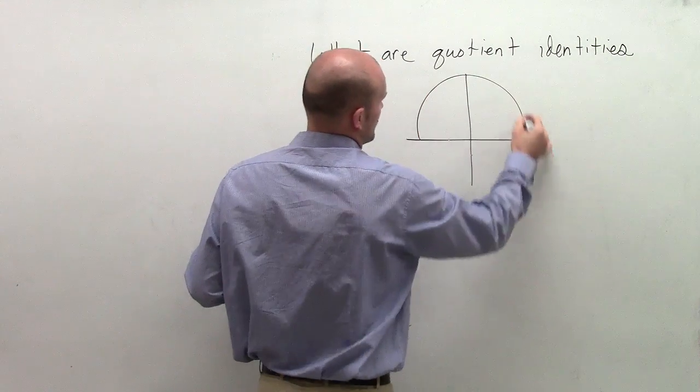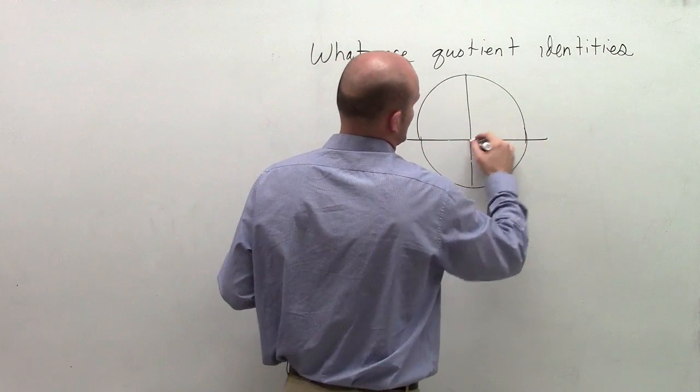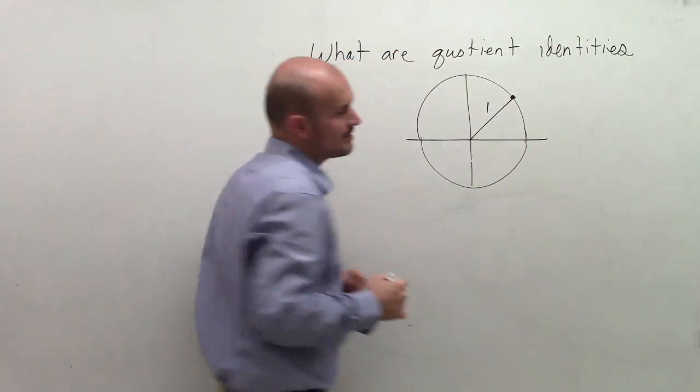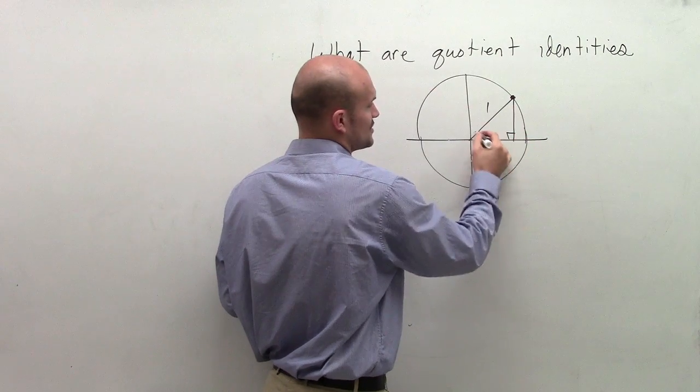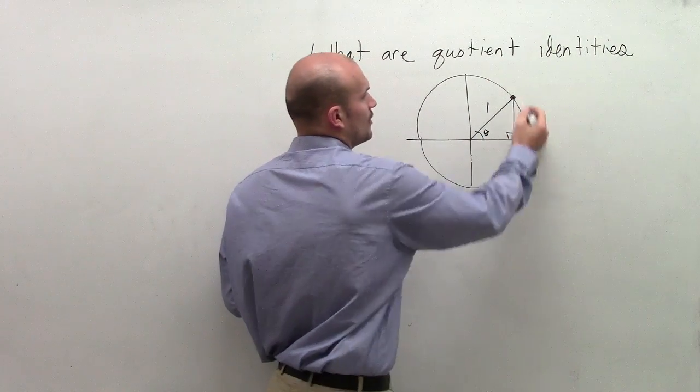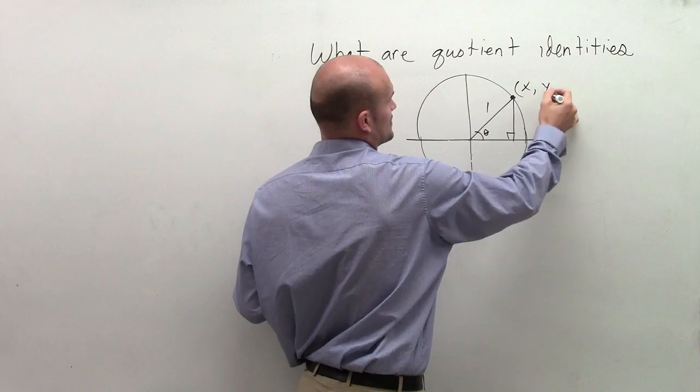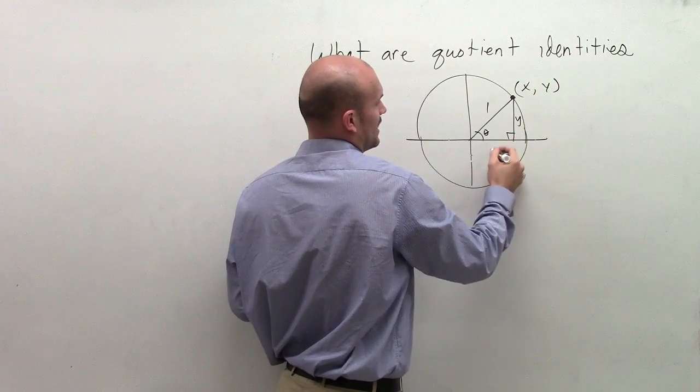When we're talking about the unit circle, one thing we discussed was that our radius was always equal to 1. This was important because when I created a right triangle with angle theta, this coordinate point was (x, y). So we had y and x.